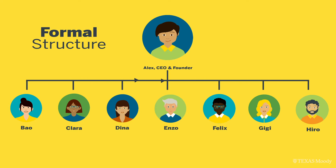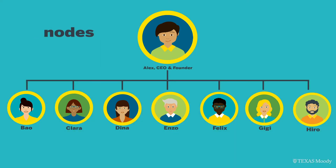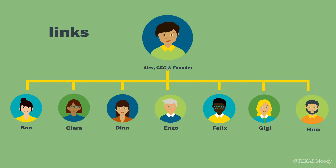In the language of social network analysis, these are nodes. Nodes can be anything in a network — individuals, databases, organizations, and so on. And what connects them are links: some sort of relationships like amount of communication, degree of trust, frequency of advice seeking or advice giving, as well as formal supervision.